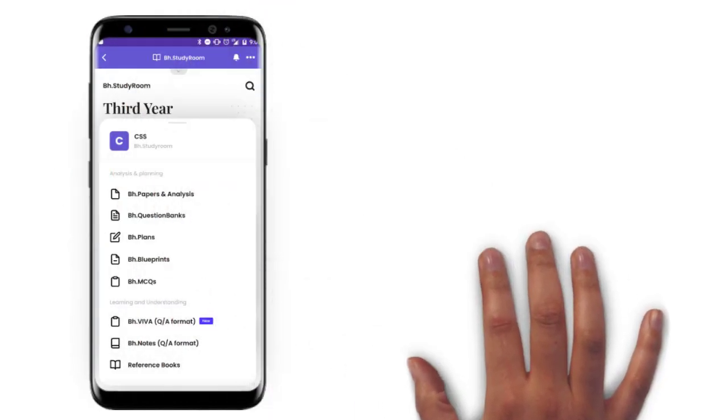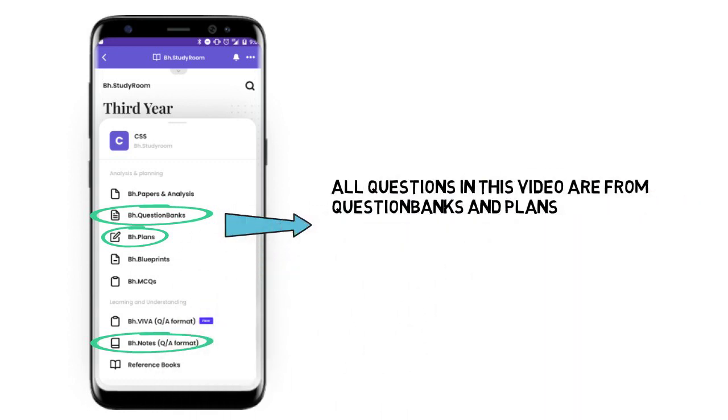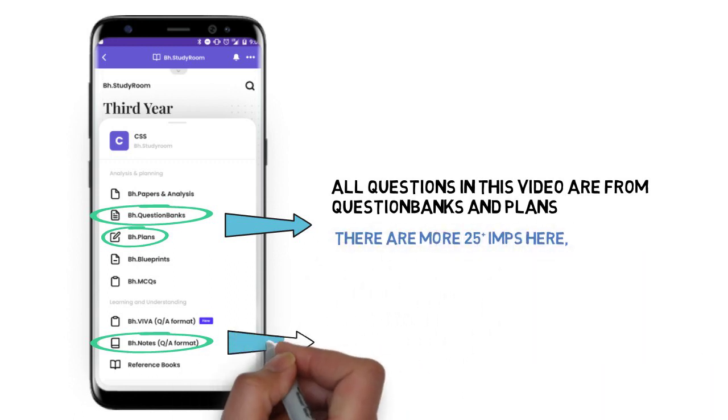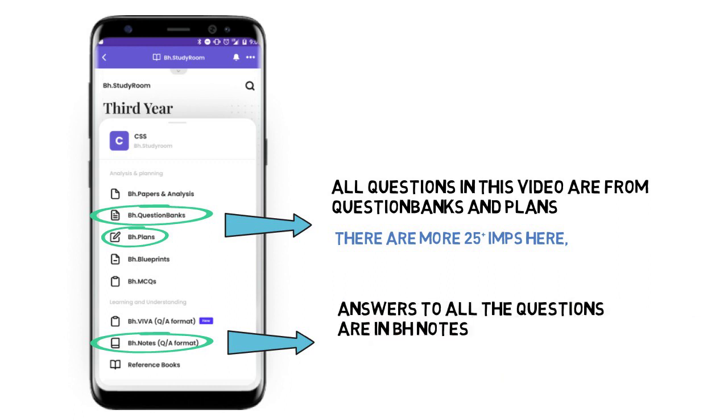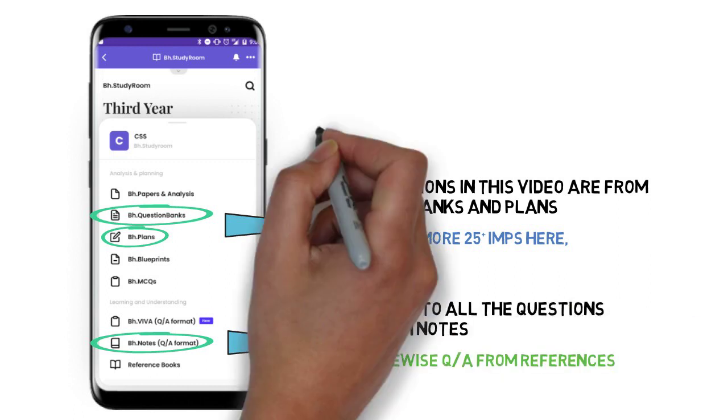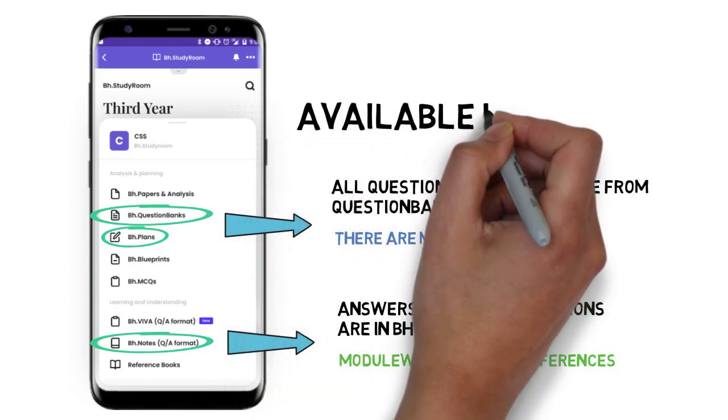We have already added BH plans for you all. We have added module-wise questions, that is BH question banks, and all the solutions for these questions are available in the BH notes. These materials are available in the Brainators app, so make sure you check it. I know most of you already have the app and the subscription and the smart plan, so we need not worry. You can just directly go to the app, start your preparation, and you are good to go for the exam.